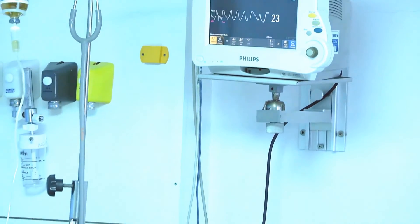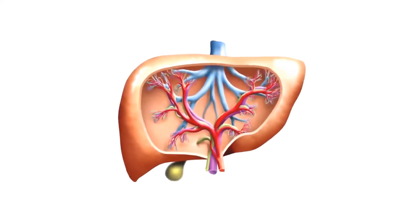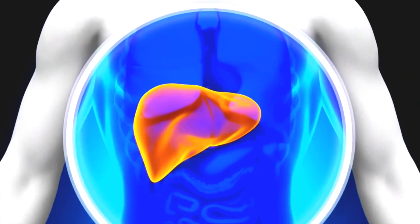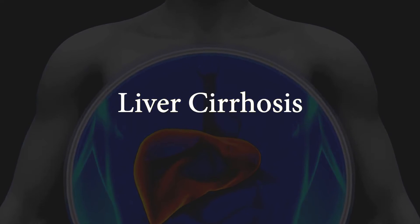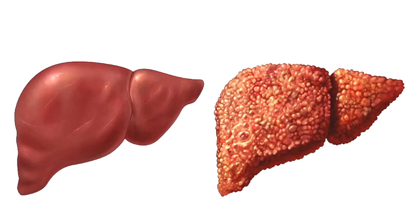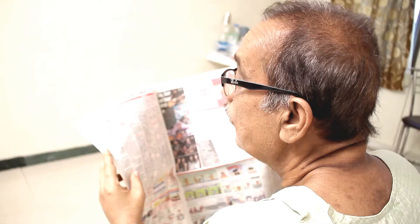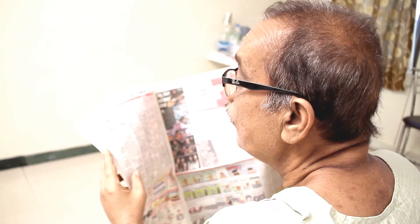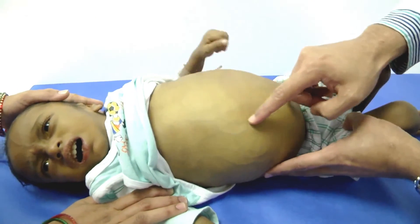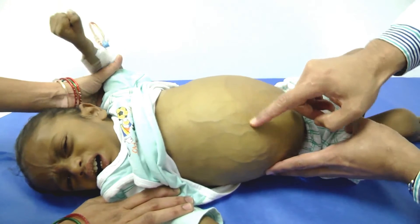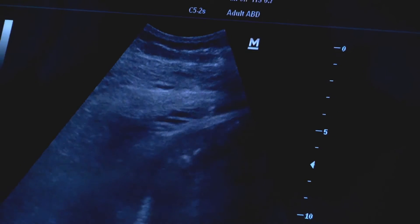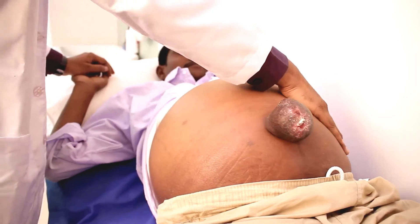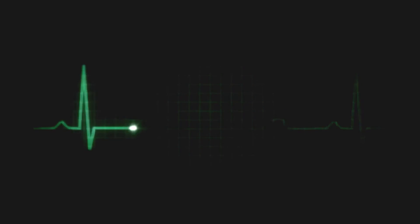It could be hepatitis B or fatty liver. When neglected, these diseases can result in total liver failure — a condition known as liver cirrhosis. This condition is irreversible and is responsible for the deaths of many people every year. When a person's liver fails, it can be fatal.